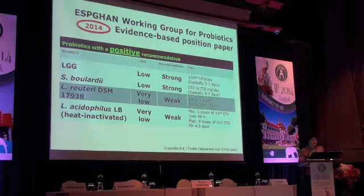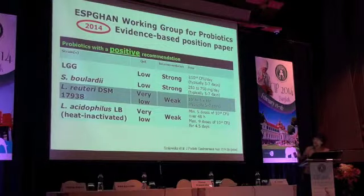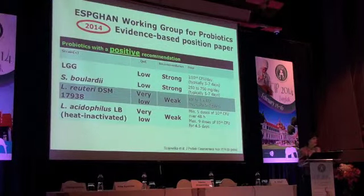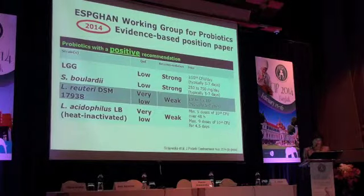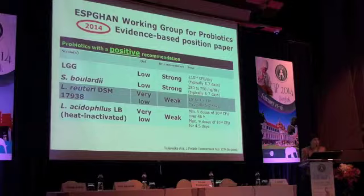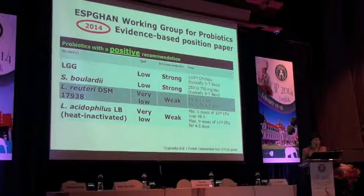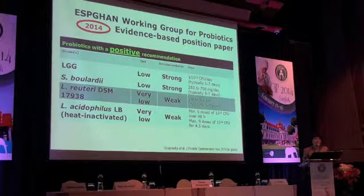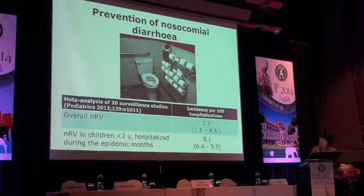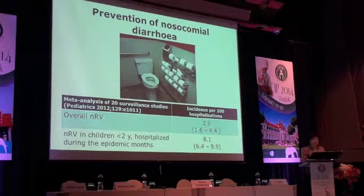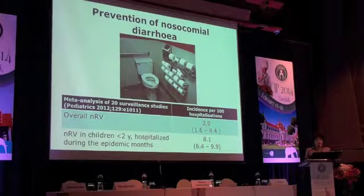The recommendation is mainly based on the systematic review I just presented. The guidelines also include Lactobacillus acidophilus LB, which is not a typical probiotic because it is heat-inactivated — not a live probiotic — but it is discussed in the context of probiotics and therefore included in our position paper. Lactobacillus reuteri DSM 17938 receives a very low quality of evidence and weak recommendation, but it is now one of the probiotics which may be considered in the management of acute gastroenteritis — always in addition to rehydration, never to replace rehydration.